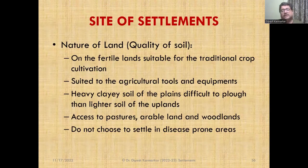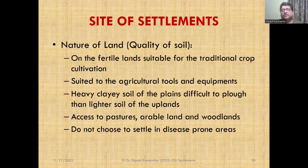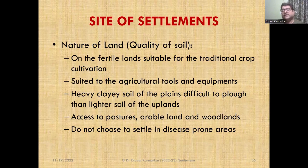Another significant siting factor is fertility — the fertile soil — because quality of soil is very important. For most settlements, especially rural settlements, agriculture is a major activity. Therefore, if the soil is fertile, then agriculture can be developed, and that becomes a favorable site for a settlement. The siting factors of rural settlements are more natural, connected with the basic needs of food, water, and shelter. Fertile lands are more suitable for crop cultivation. At the same time, lands which are ploughable, which can be ploughed very easily using agricultural tools and equipment, are preferred. However, certain soils which are difficult to plough because of their clay nature may discourage the growth of a settlement. Similarly, sites which have access to pastures, grasslands, arable lands, irrigated lands, or woodlands are also chosen as the site of settlement. Areas which are disease-prone are obviously not chosen as a site for a settlement.